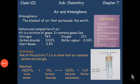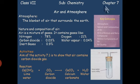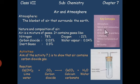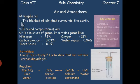Hello students, today I will discuss a topic of class 7 subject chemistry, chapter 7: Air and Atmosphere. In the previous video we discussed the first key concept — atmosphere — and we also started the second key concept: nature and composition of air. Let us first revise what we discussed in the previous video.